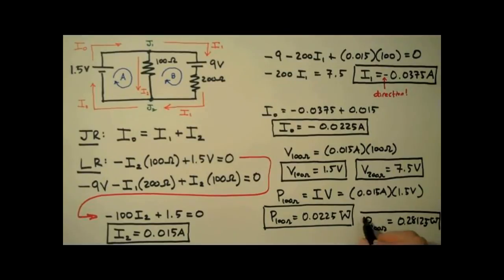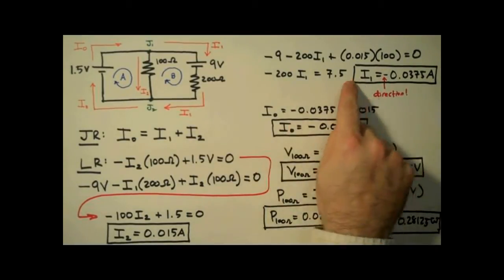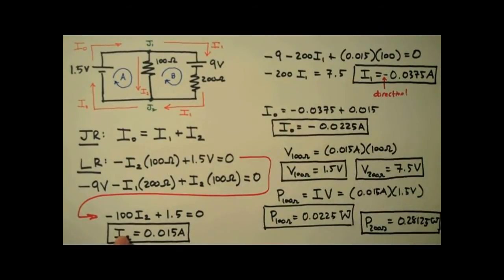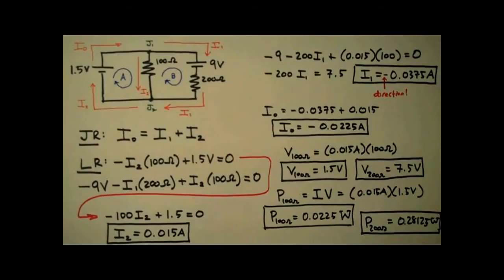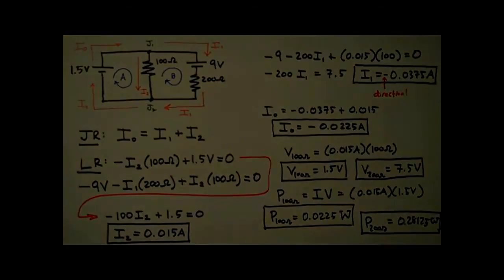And we're done. So there you have it — the current through, the voltage across, and the power dissipated by resistors using Kirchhoff's rules. I'm Jesse Mason. I hope this was helpful to you. Until next time, happy learning.